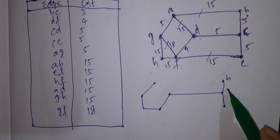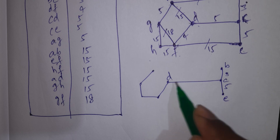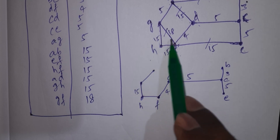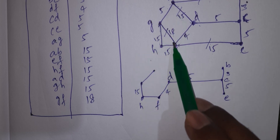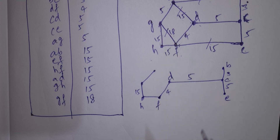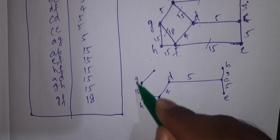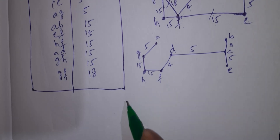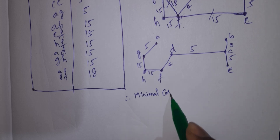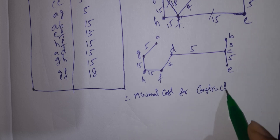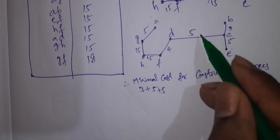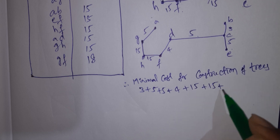Edges selected: B = 3, C = 5, E — next D, cost 5 — next D, F cost 4 — next H, this is 15. We choose minimal cost: G, A = 5, and here is 15. Therefore, minimal cost for construction of the spanning tree is 3 + 5 + 5 + 4 + 15 + 15 + 5 = 52.